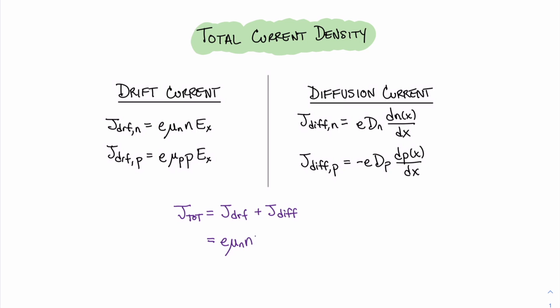Expanding this equation gives us four terms, and this is our four term equation for total current density. No worries though, even though this has four different terms, many of these terms will cancel in a given problem for deriving current in a semiconductor.